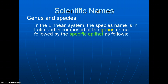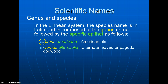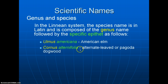In the Linnaean system, the species name is composed of two parts: the genus name followed by a second name called the specific epithet. For example, Ulmus americana is the scientific name for American elm. Ulmus is the genus name, which is always first and can be used by itself. But the second part, americana, is the specific epithet and cannot be used by itself — it must always be associated with the genus name.